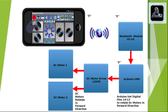Let me take an example. Suppose we press the forward button present on the application. Whenever you press a button, a value is sent by the Android application, received by the Bluetooth module, and further sent to Arduino Uno for processing. In this case, the value received is F. We have programmed Arduino so that whenever the value received is F, it sets digital pins 10 to 13 such that both DC motors rotate in the forward direction. Similarly, other values control other directions.